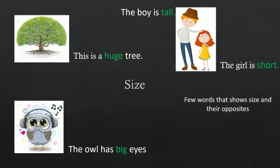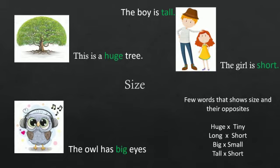Few words that show size and their opposites are as follows: huge, tiny; long, short; big, small; tall, short. Therefore, sizes that describe the nouns are describing words or adjectives.